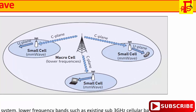The control plane and user plane for a small cell are separated. Control information is handled by the macro cell because it uses low frequency and therefore has higher range. Data transmission uses high frequency or millimeter wave frequency — its range covers a small area but capacity is high, because the small cell uses the full frequency bandwidth for the user plane.